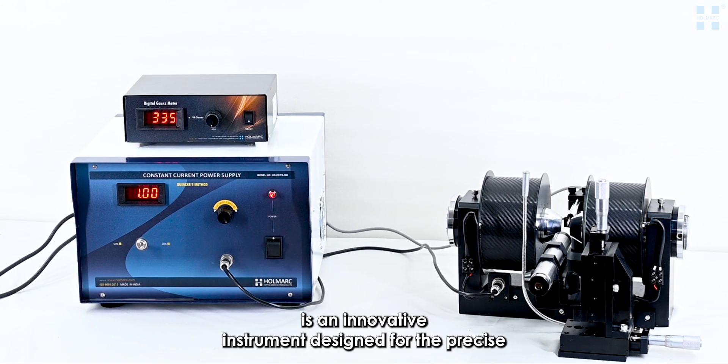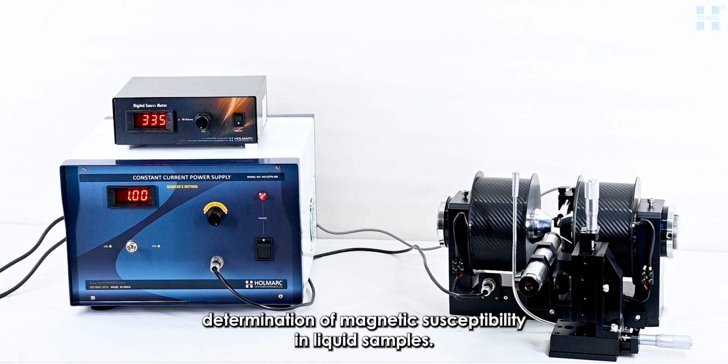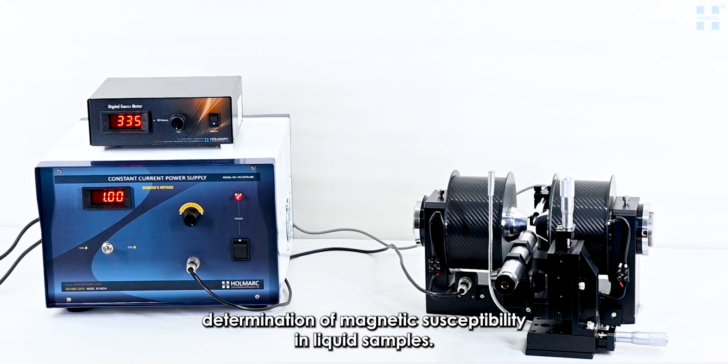Holmark's Magnetic Susceptibility, Quinkies Method Apparatus, Model HOED-EM07 is an innovative instrument designed for the precise determination of magnetic susceptibility in liquid samples.